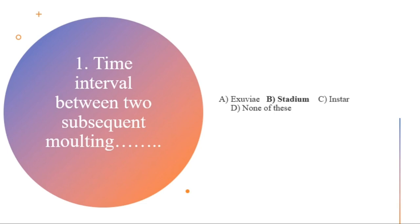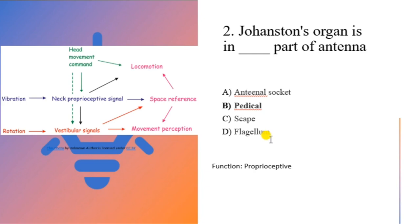Second question: Johnson's organ is in which part of the antennae? The antennae has four parts starting with the antennal socket and scape, followed by pedicel and flagellum. The Johnson's organ is present in the pedicel. The main function of the pedicel is proprioceptive — identifying body orientation. Whenever an insect is flying or doing any activity, knowledge of the insect's orientation is mainly provided by this Johnson's organ in the pedicel.